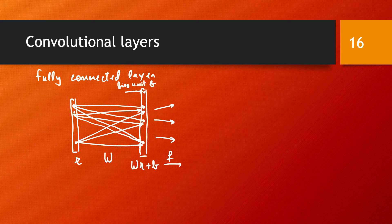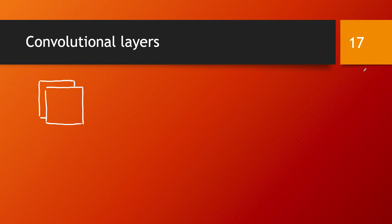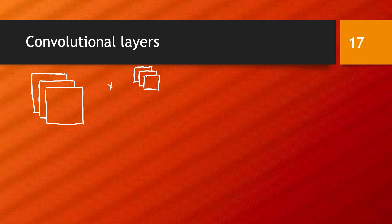So we compute the activation vector of this layer, and it goes in a similar way for a convolutional layer. In the input of a convolutional layer, we will have a tensor — data coming in the form of matrices with several different channels. You process this data with a number of filters, and these filters must have exactly the same number of channels as your input data.